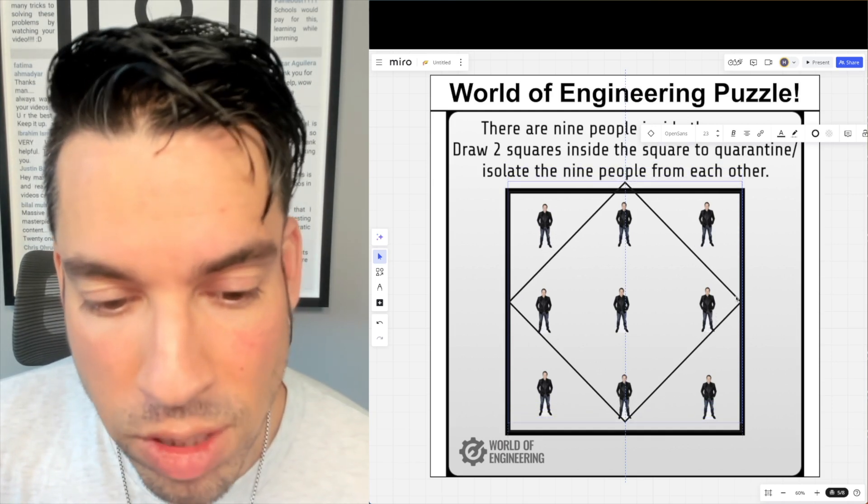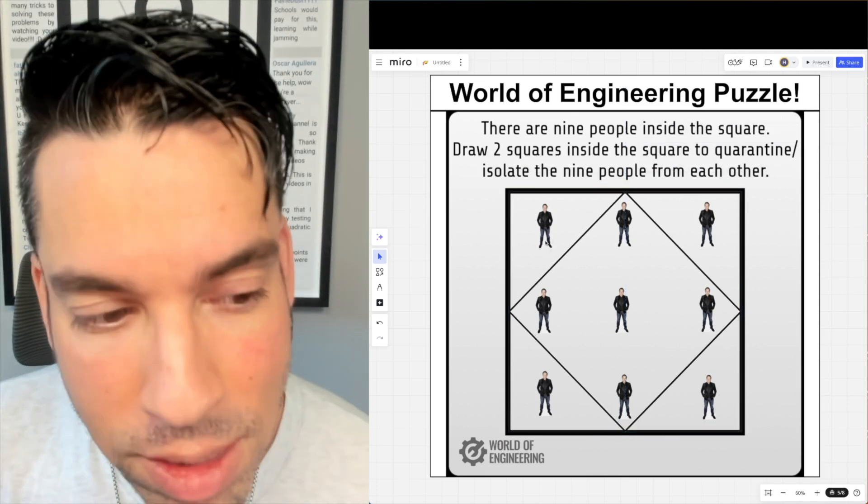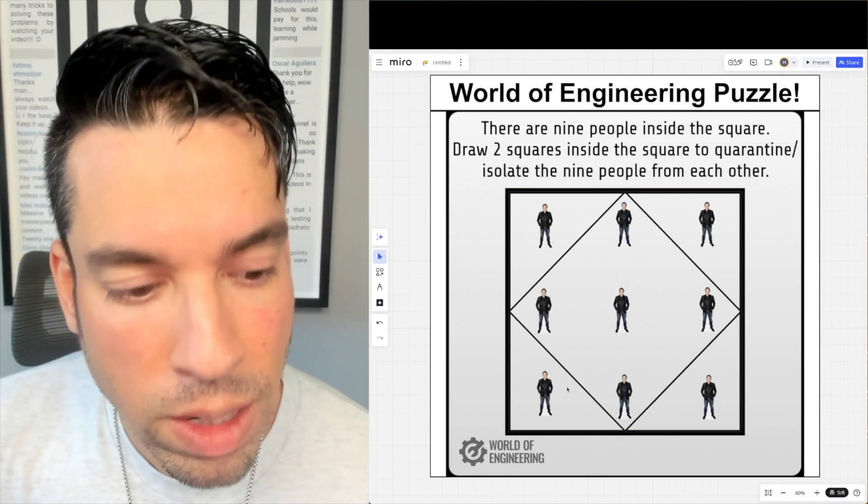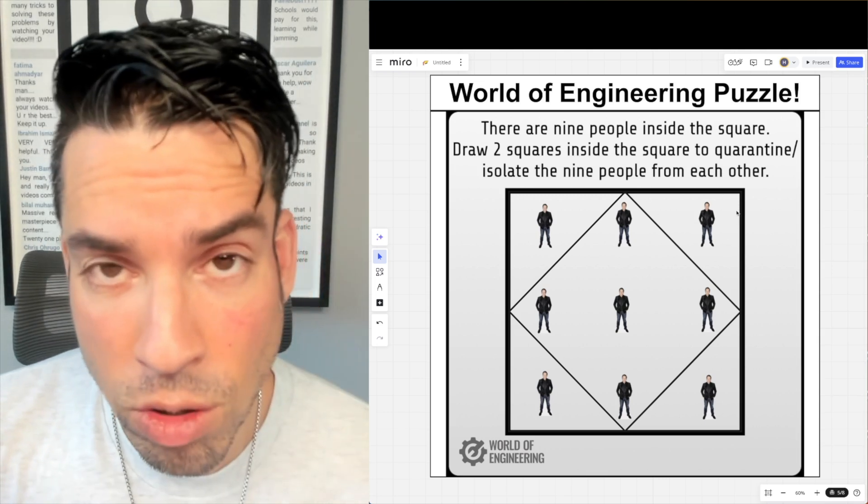With that first placement, we've already isolated one, two, three, and four people, because also using the boundaries of the existing square, they are in their own zones.